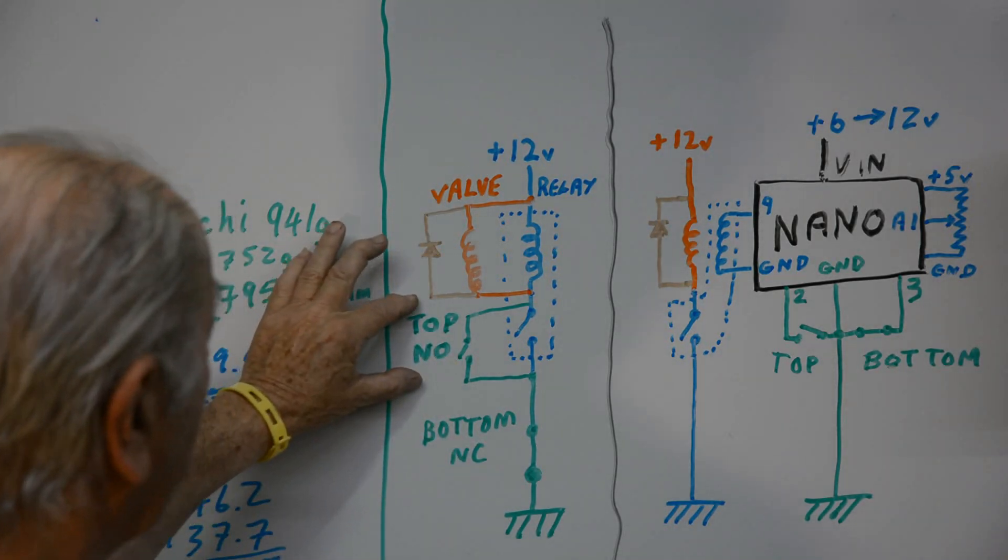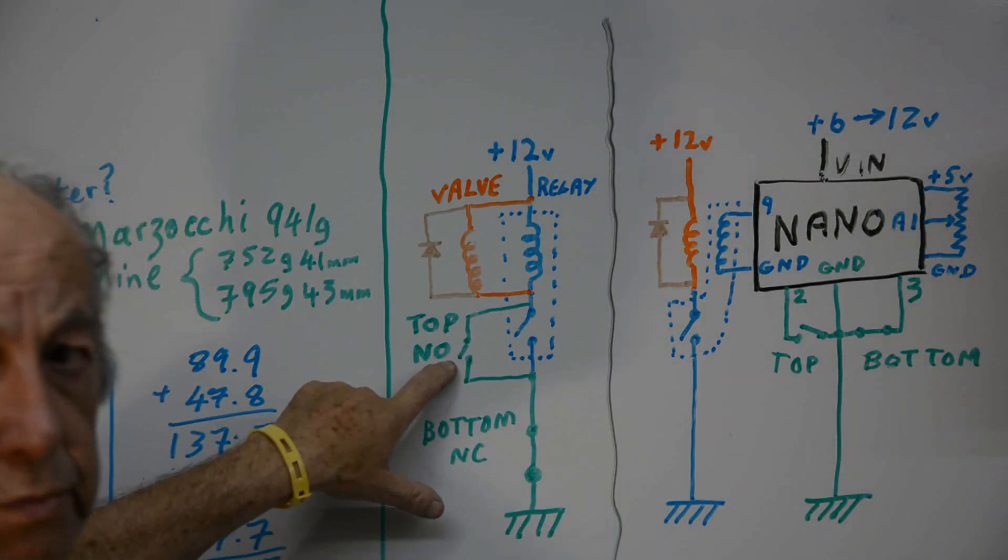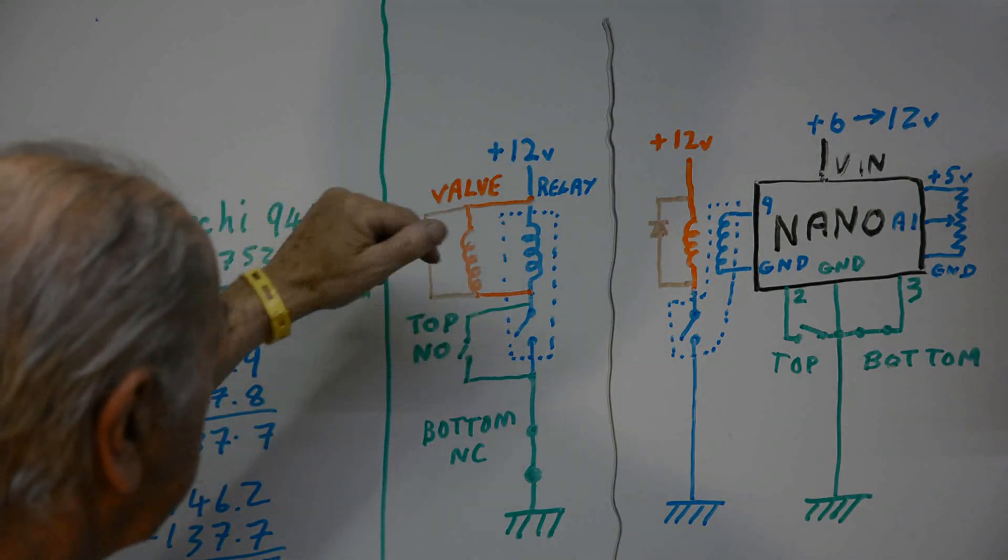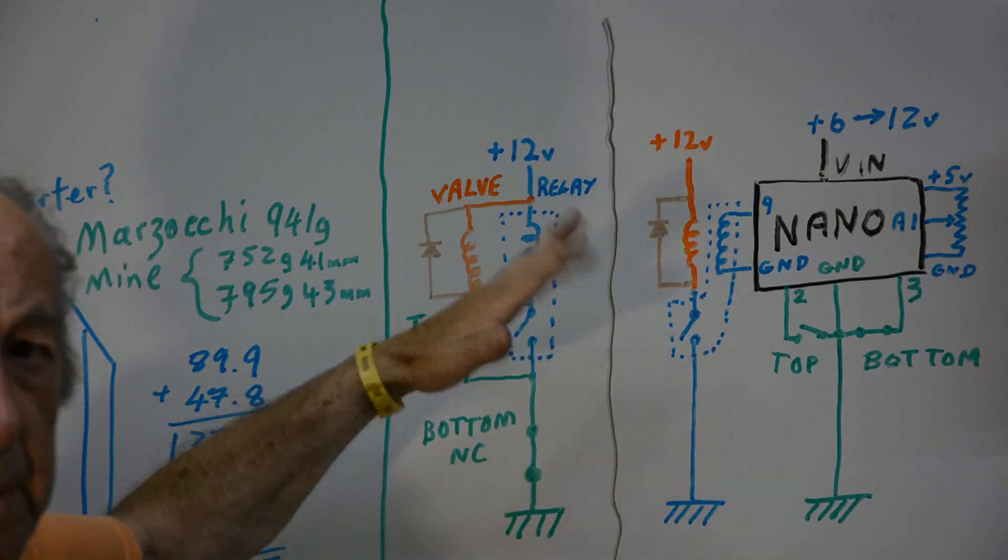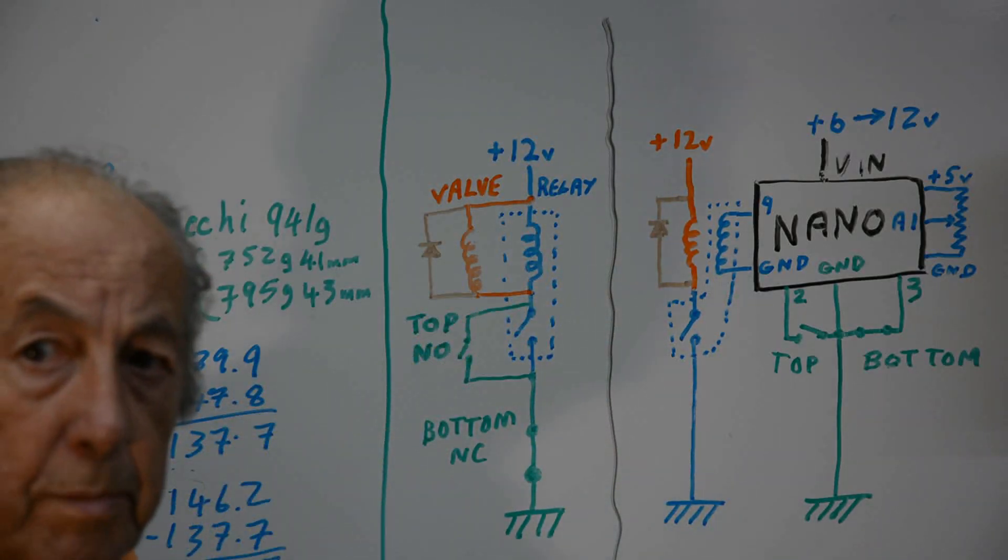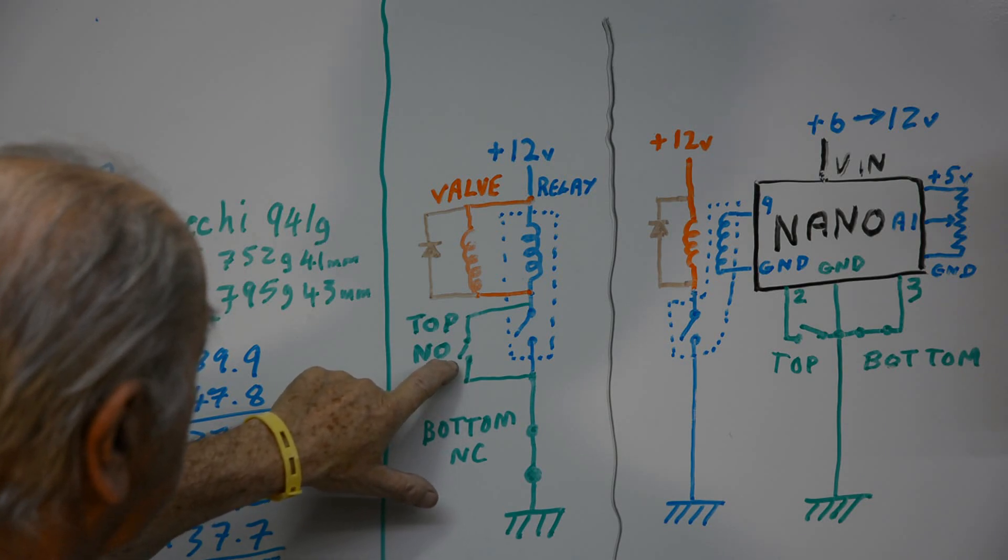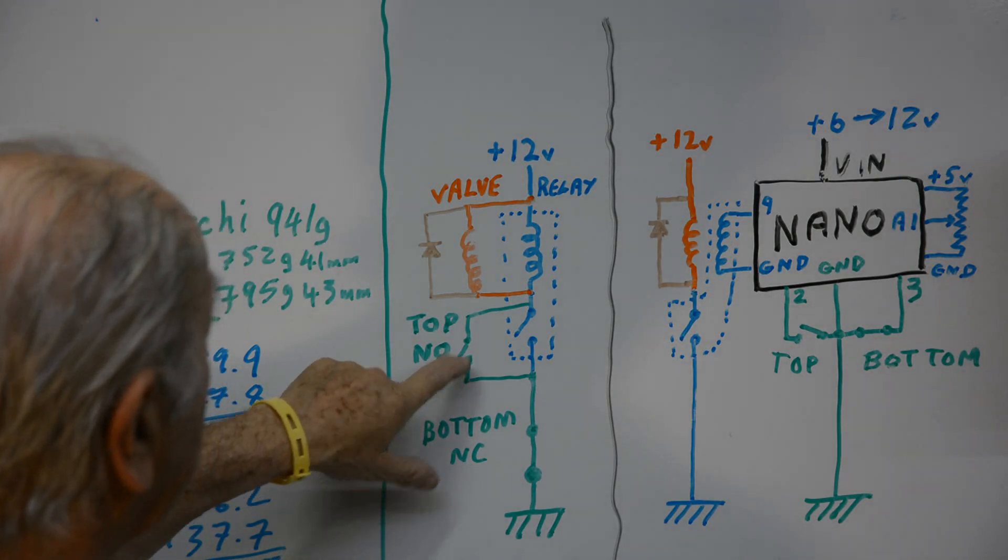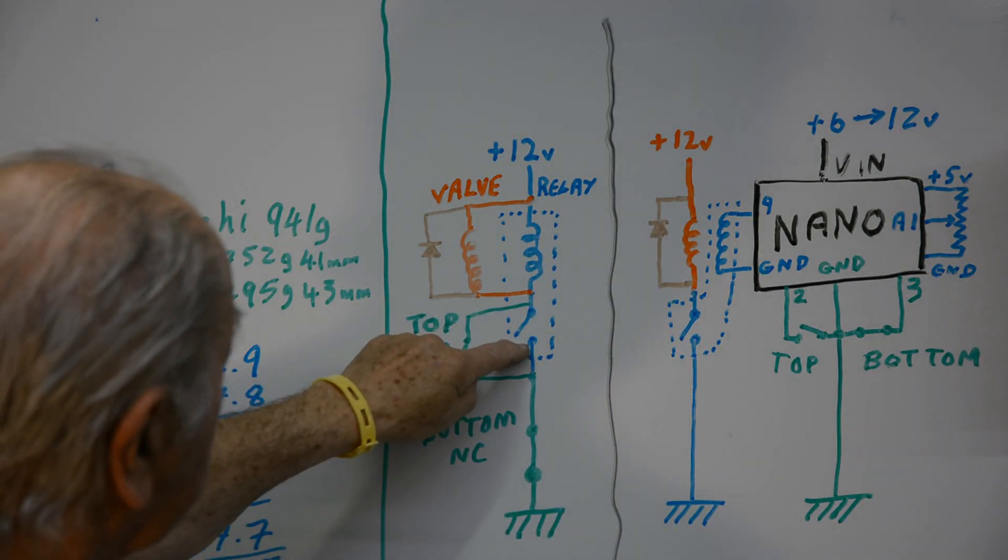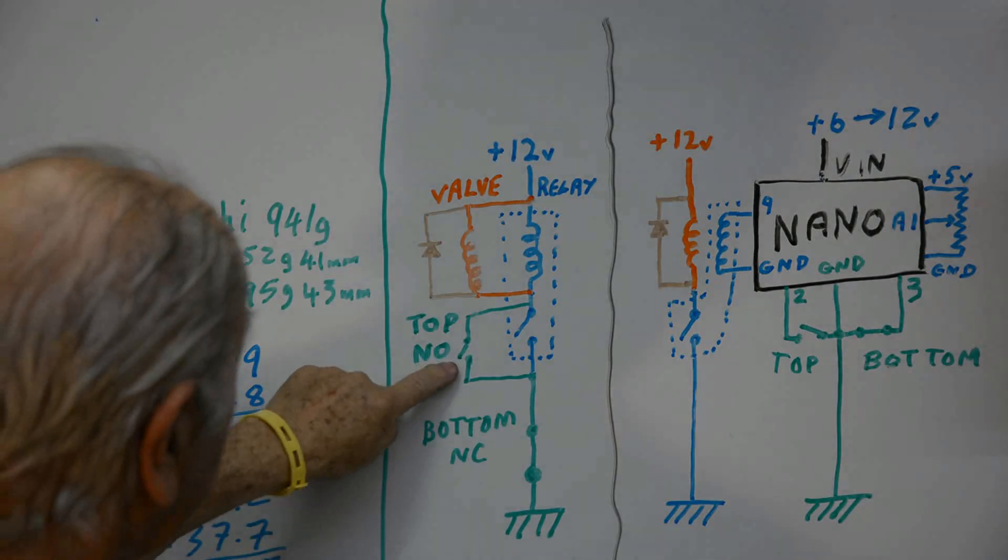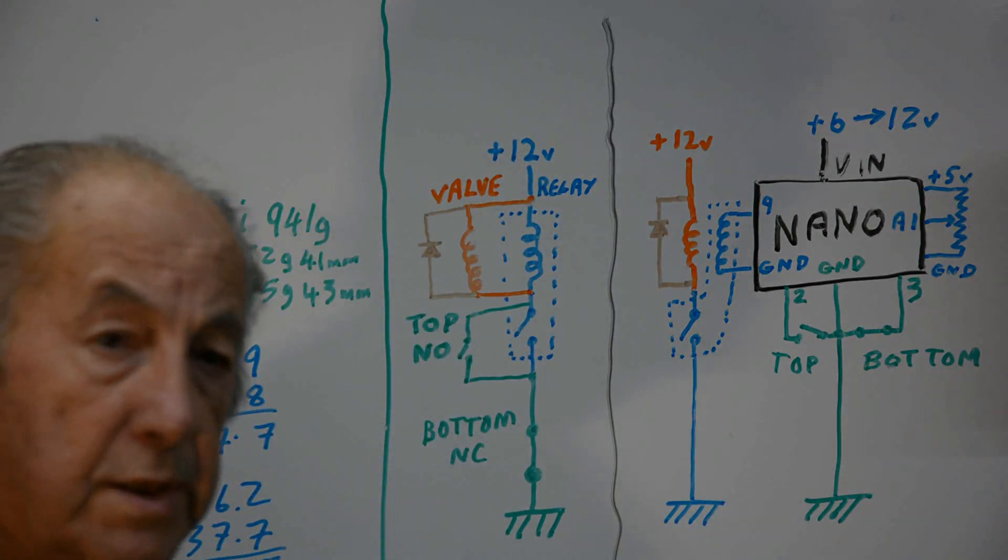Now if we just had that without the relay what would happen is as the ram was at the top it would close this switch so the ram would start moving down but then the switch would open almost straight away and so the ram would go up again. So the ram would just dither about like this at the top of its stroke. What happens with the latching relay is when the ram is at the top and it closes this contact, as well as powering the solenoid valve it powers the relay but its own contacts are then closed. So when this one opens this is still closed and so it maintains the current flow through the solenoid valve.